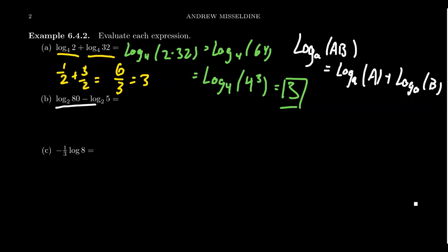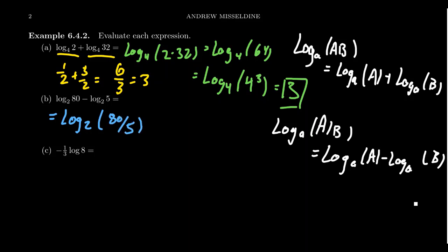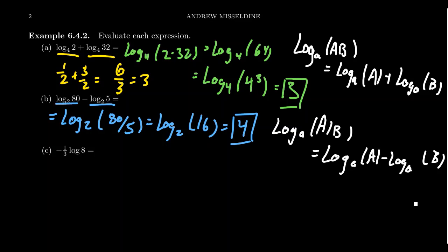Look at log base 2 of 80 minus log base 2 of 5. Unlike the previous example, these values are irrational — there is no rational power of 2 that gives you 5, so this would be very difficult without a calculator. But the second law of logarithms applies: the difference of two logarithms condenses to log base 2 of 80 divided by 5, which is log base 2 of 16. And since 16 is 2 to the fourth power, the answer is 4.